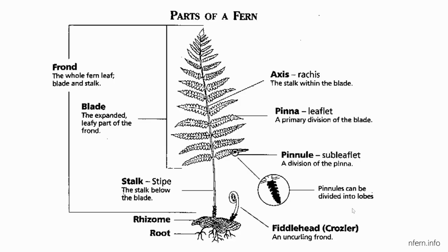Let's jump into the anatomy of a fern. The frond essentially includes everything that protrudes from the soil. Below the soil we have our rhizome, which is a thicker root-like formation, and our roots are generally more fibrous, not always. The blade is the leafy expanded part of the frond, and the stalk refers to everything below the blade. The axis is essentially that stalk extending solely through the blade, and the pinna are the leaflets that are directly connected to that central stalk.